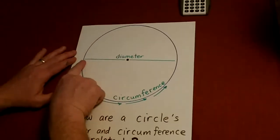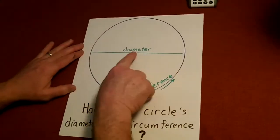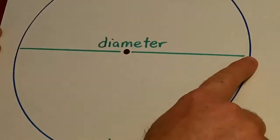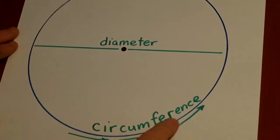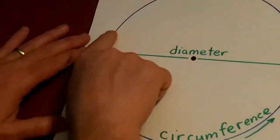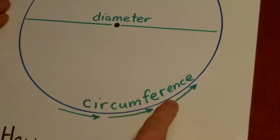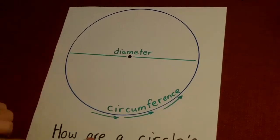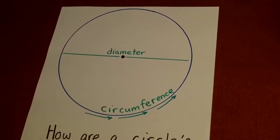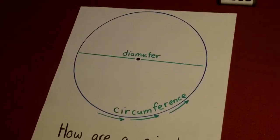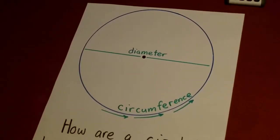We know that the line across a circle that goes through the center from one side to the other, that's called the diameter. And we know the outside part of the circle that goes all the way around is called the circumference. Well, they're related. And an ancient culture, the ancient Greeks, they found out this relationship.